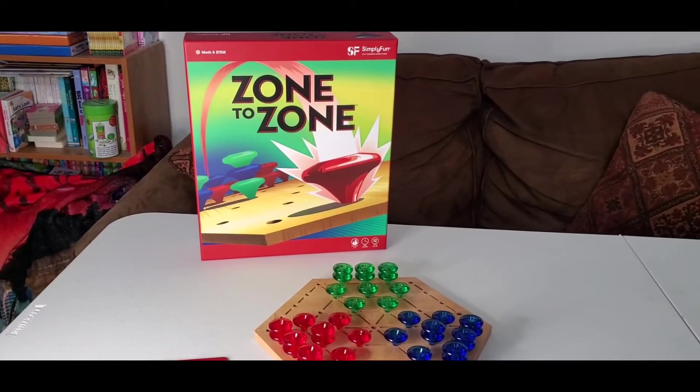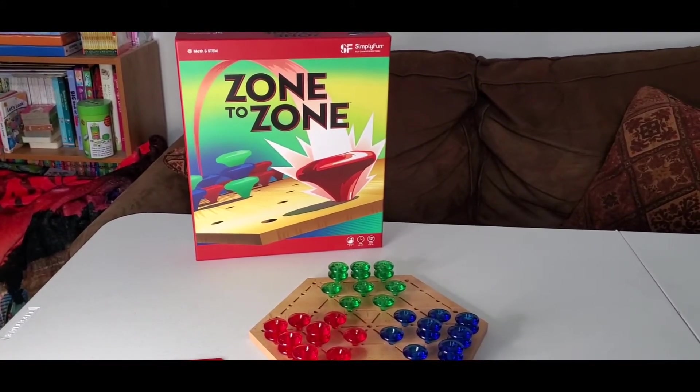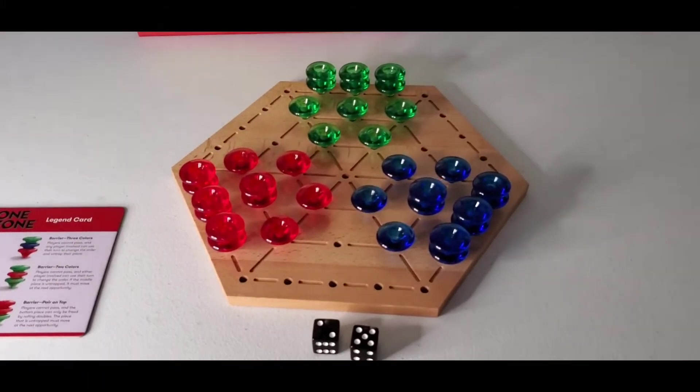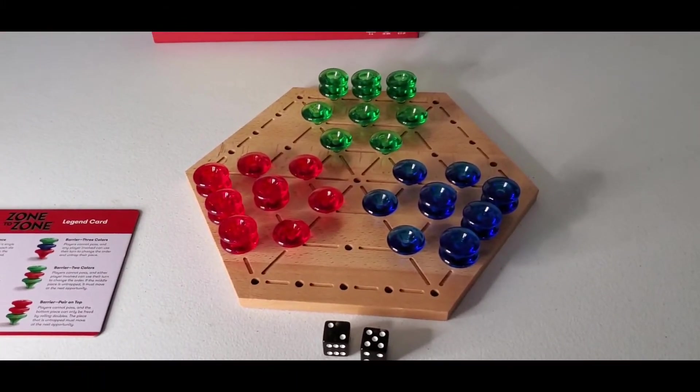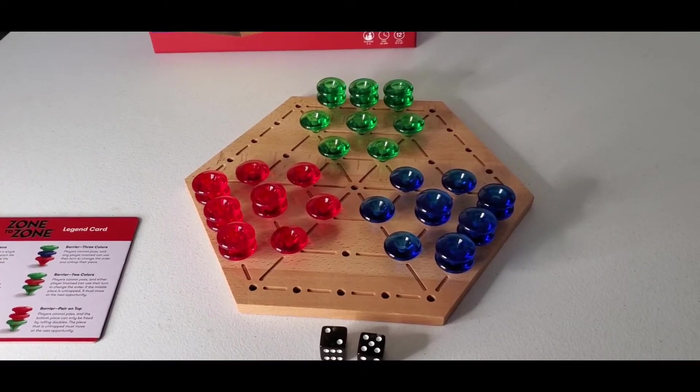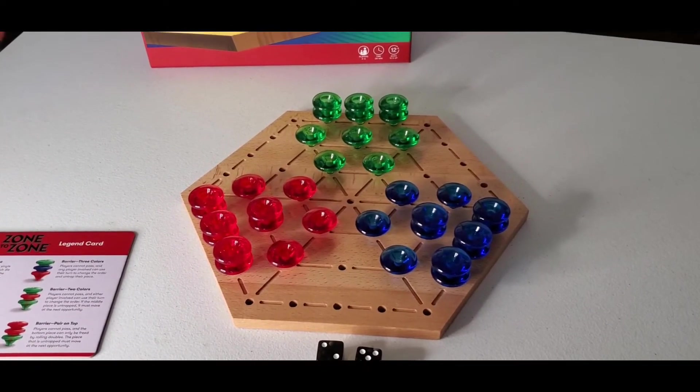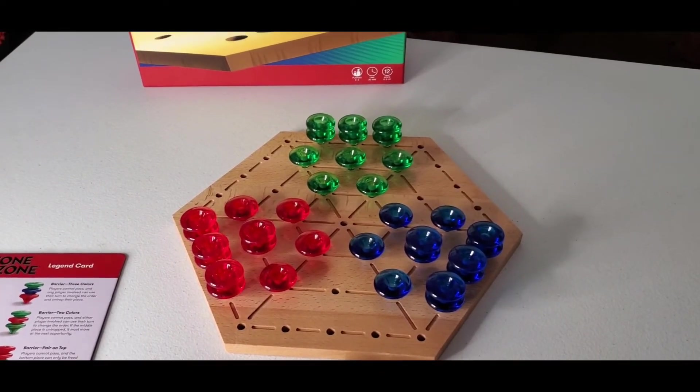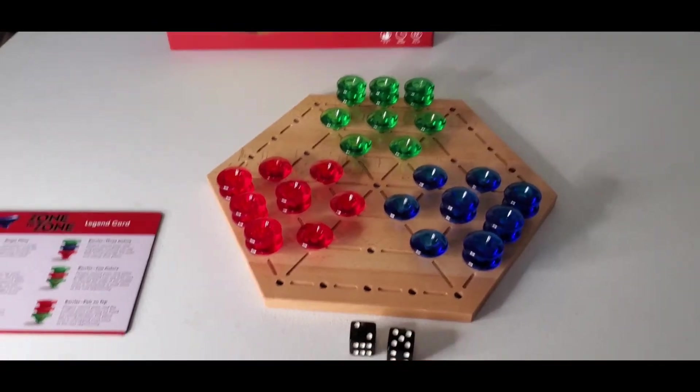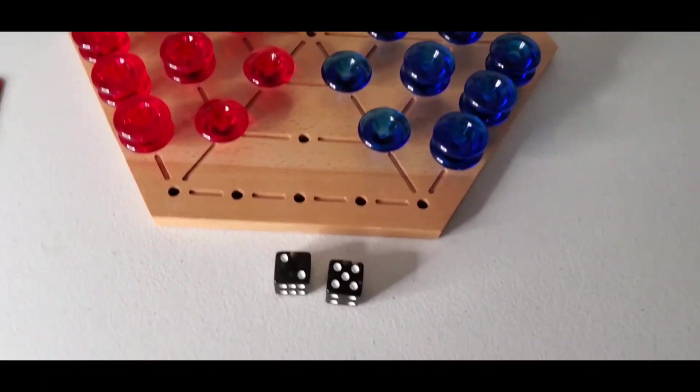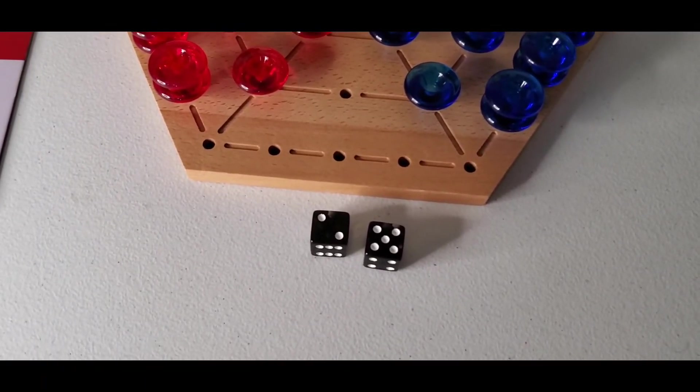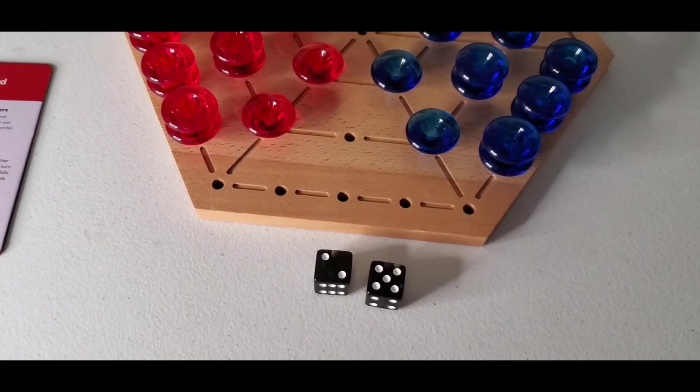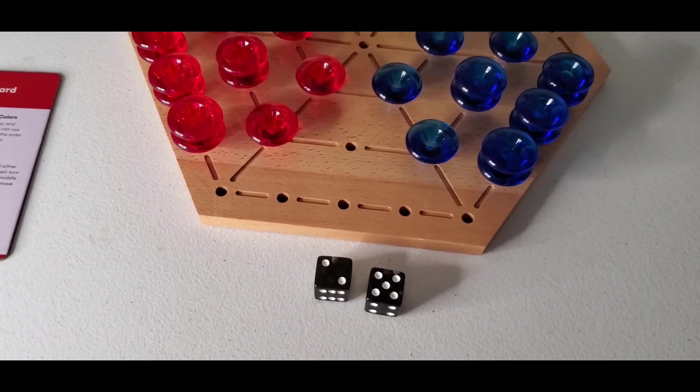Zone to Zone is for ages 12 and above, two to six players, and practices spatial reasoning and probability. In this game, players roll the dice to strategically move across the game board while also blocking the movements of their opponents. The first player to move more than half of their pieces to the starting position in the opposite zone wins. So here I have rolled the dice and I've got seven. So I could either move one of my pawns seven spaces or I could move one five and one two.